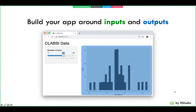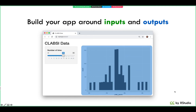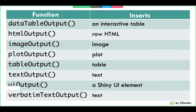Now let's look at outputs. Outputs are things like plots and text — the kinds of objects you generate with R. Similar to the input family of functions, Shiny provides a family of functions called output functions because they all end with the word 'output.' Just like input functions, you can pass these to the fluidPage function to make them part of your UI object. There are dedicated functions to place plots, tables, text, and other things in your app.